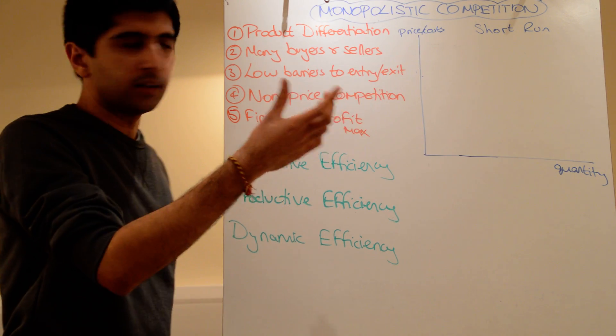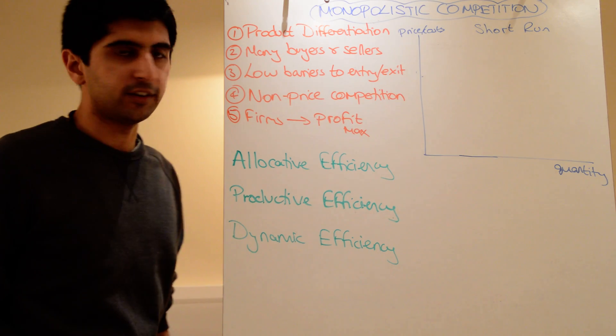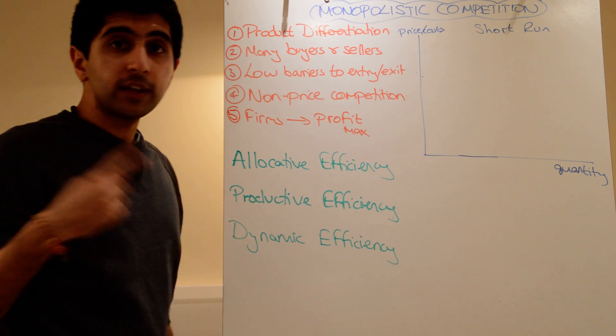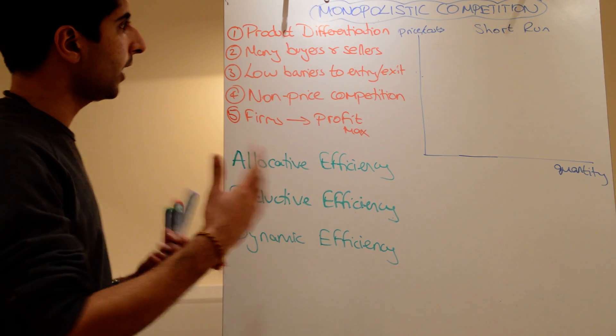Co and Oxymoron is the title. There are some characteristics of monopoly and some characteristics of perfect competition, hence the title. Don't get confused between monopoly and this. This is a very different market structure.